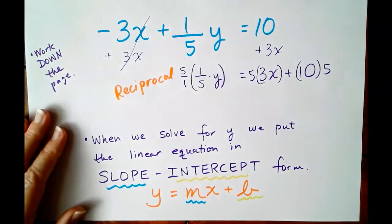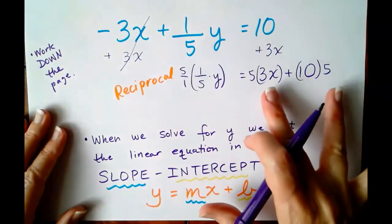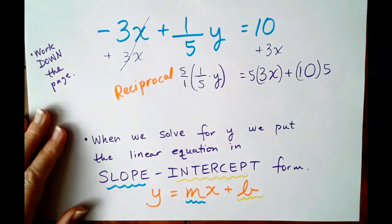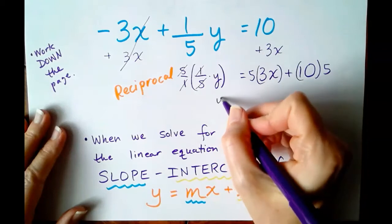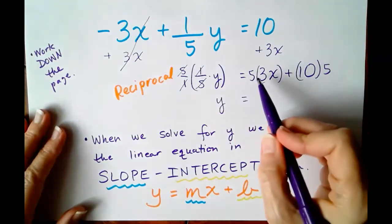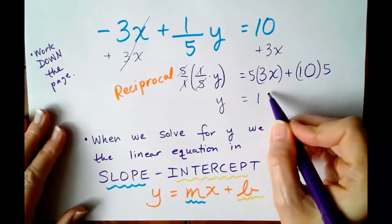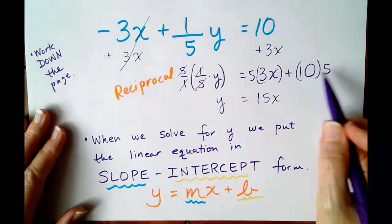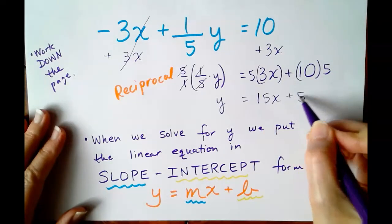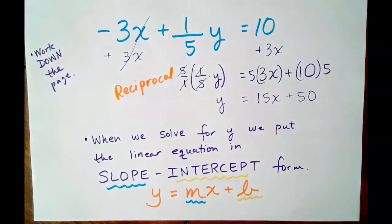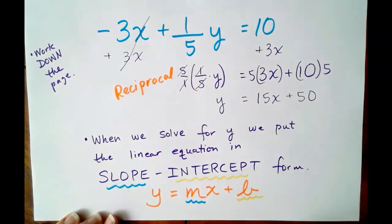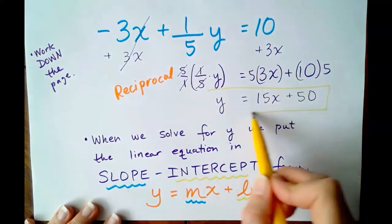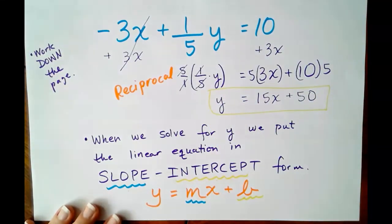So every single term, the first term and then both terms on the right are going to be multiplied by 5. 5 over 1 times 1 over 5. They are reciprocals. Everything cancels. 5 times 3X is 15X. And 5 times 10 is 50. Now, when we solve for Y...